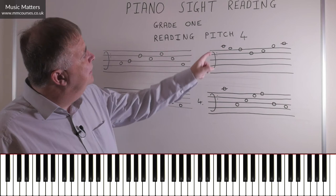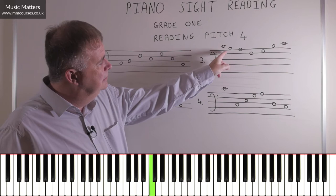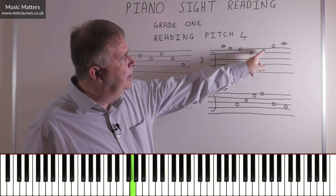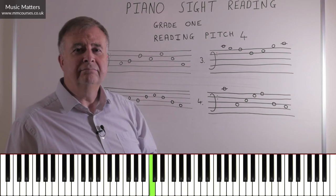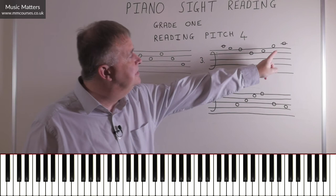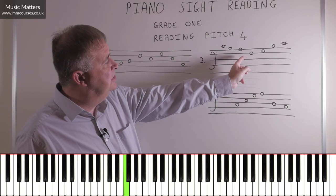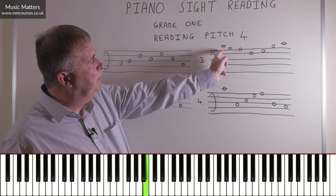Let's play number three. We start on middle C, step down to B, step down to A, skip down to F, step up to G, skip up to B, step up to C. Let's do it backwards: start on C, step down to B, skip down to G, step down to F, skip up to A, step up to B, step up to C.